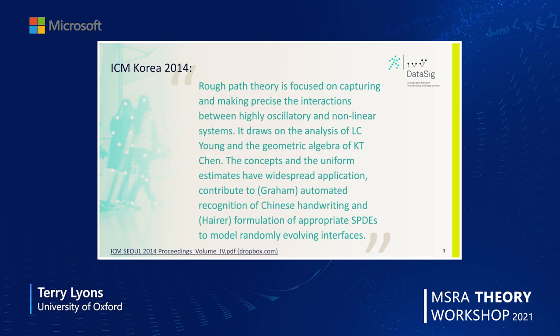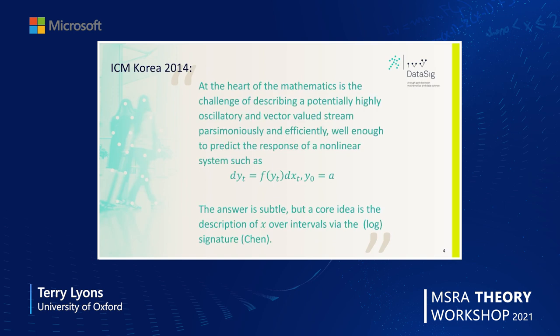On the pure side, this same understanding — the ability to understand interactions of complex evolving systems — drew the attention of Martin Hairer. He examined one of my PhD students. Martin then took it a stage further in his regularity structures and was able to get a Fields Medal, essentially transforming our understanding of stochastic partial differential equations, particularly those involving randomly evolving interfaces. So rough path theory is the mathematics needed to explain the interaction between complex systems that are oscillating wildly as they evolve.